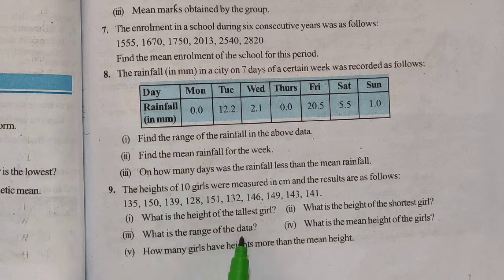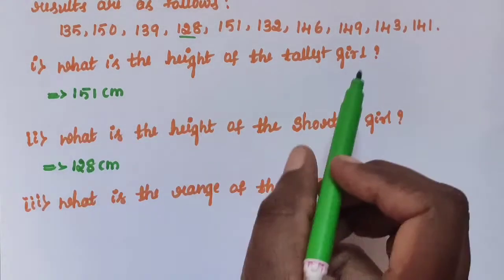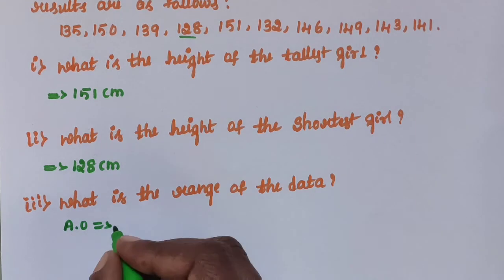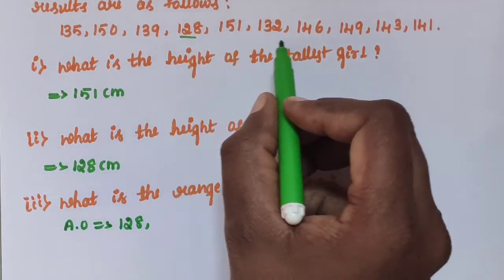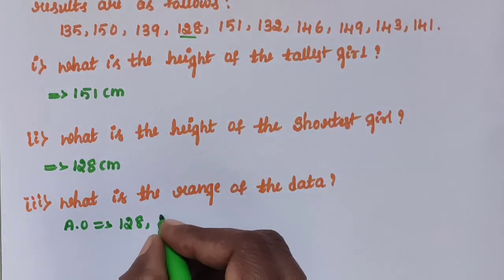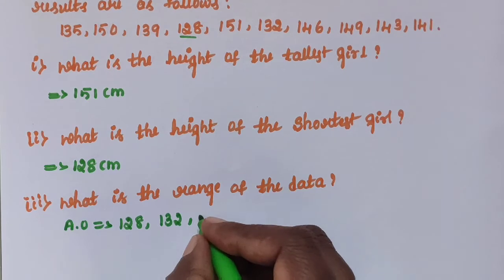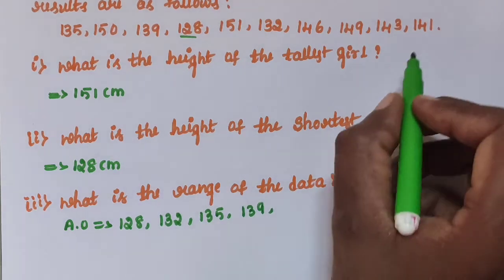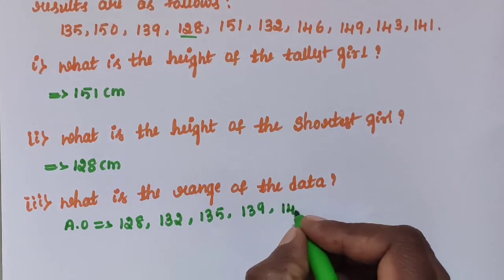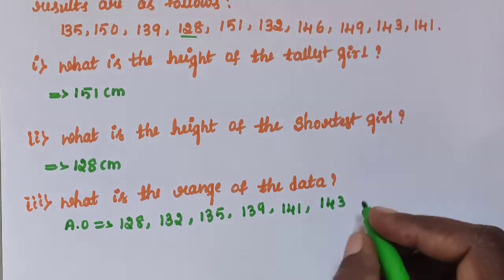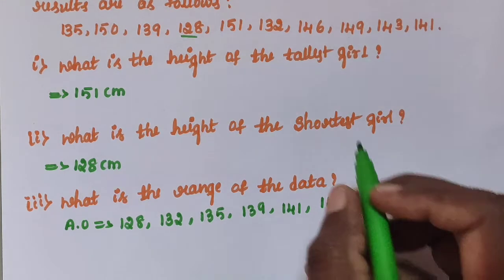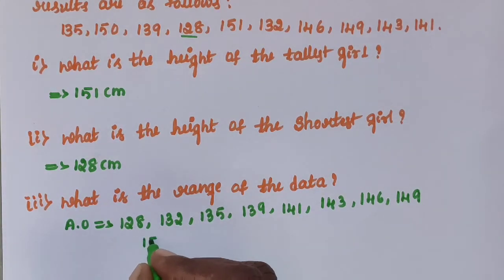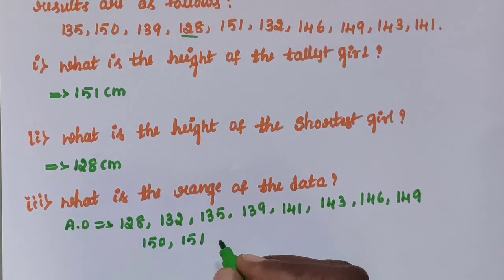Sub question 3: What is the range of the data? Arrange the given data in ascending order: 128, 132, 135, 139, 141, 143, 146, 149, 151 cm.